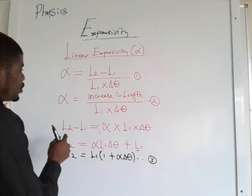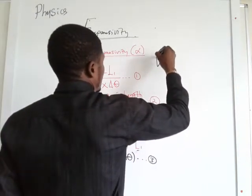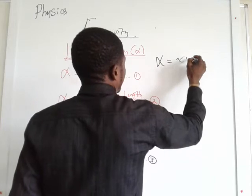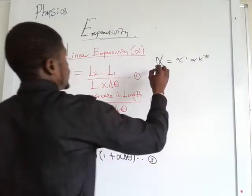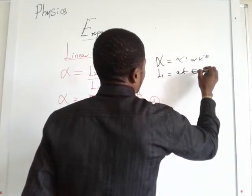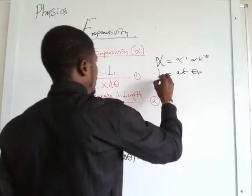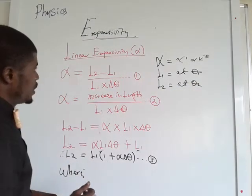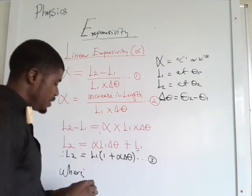These are the possible equations in this topic. Where: alpha is the coefficient of linear expansivity measured in the SI unit of per degree Celsius or per Kelvin; L1 is the original length at temperature theta 1; L2 is the new length at temperature theta 2; and change in temperature equals theta 2 minus theta 1.